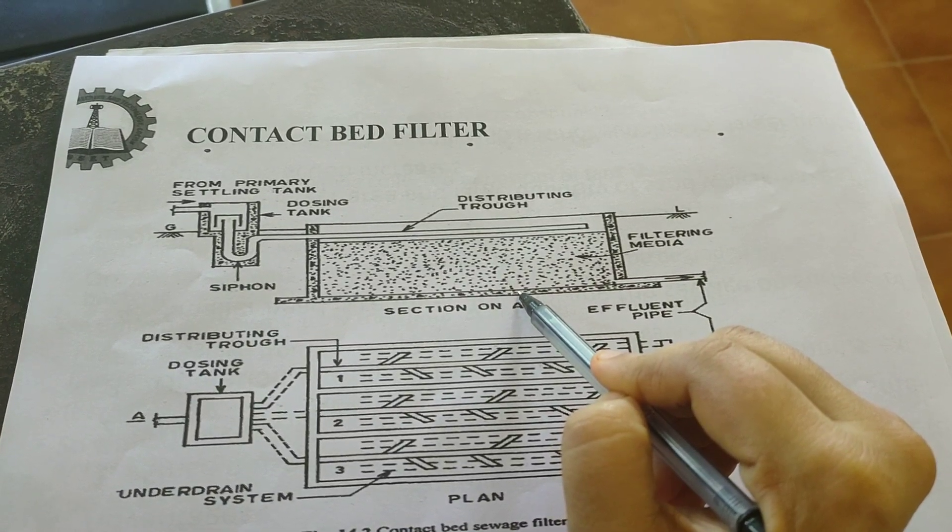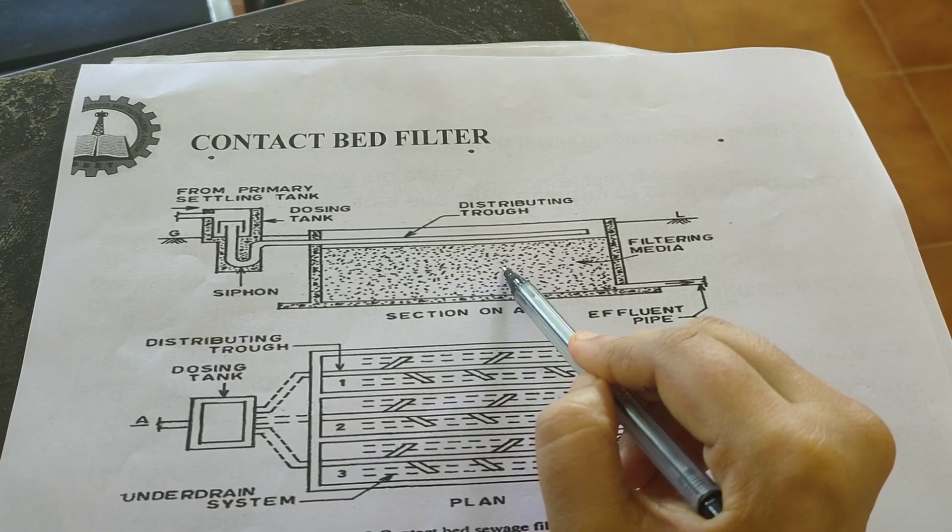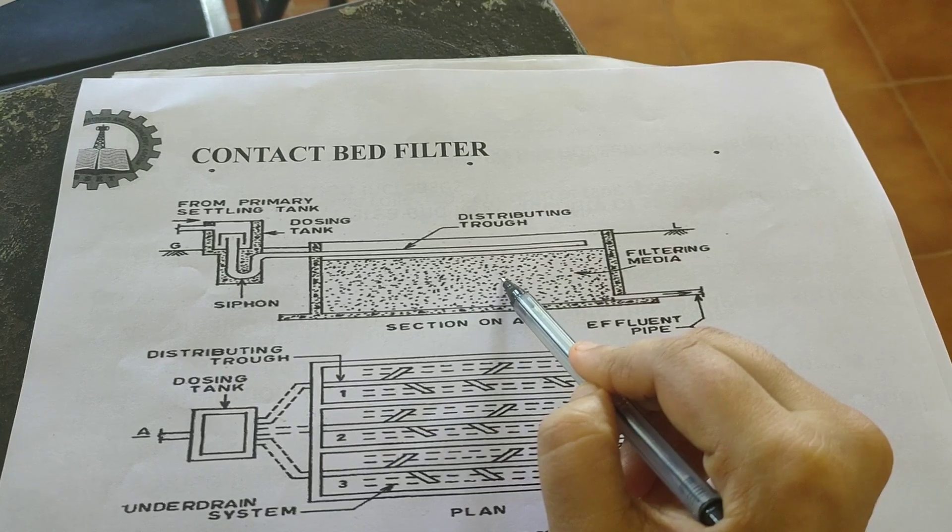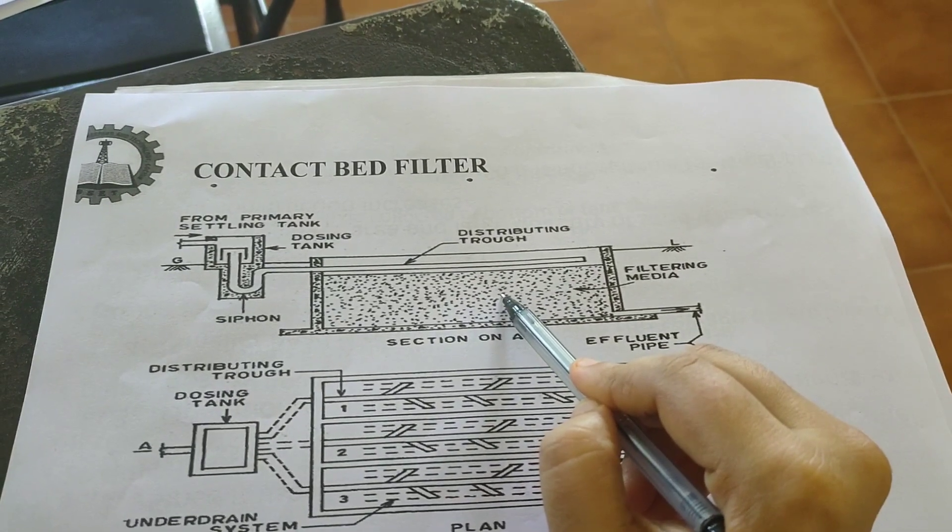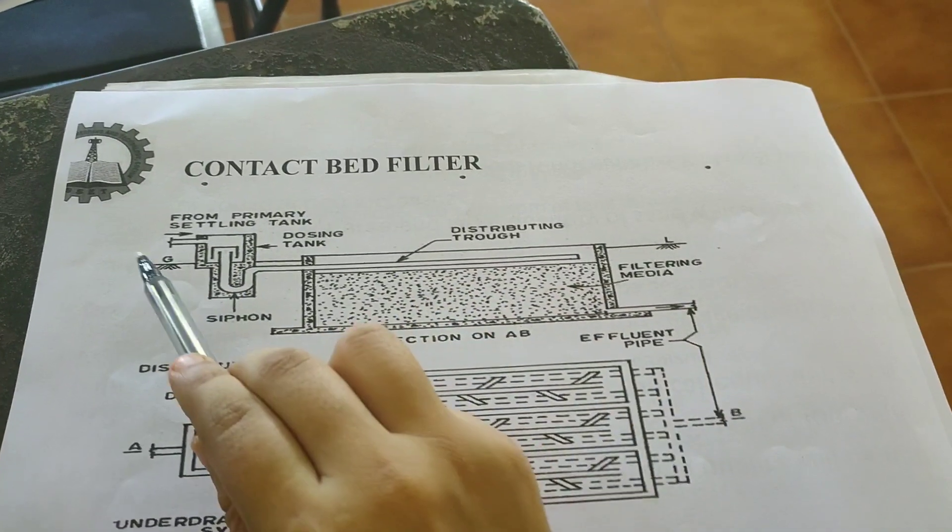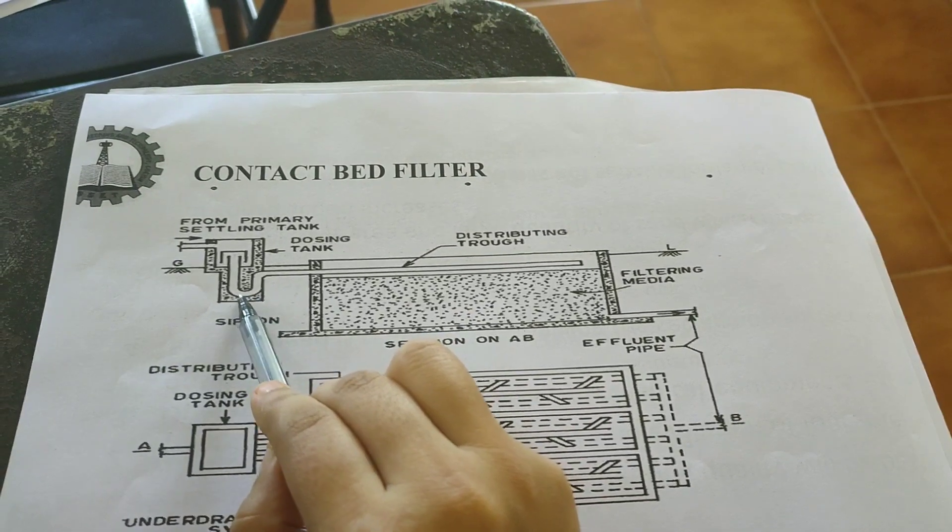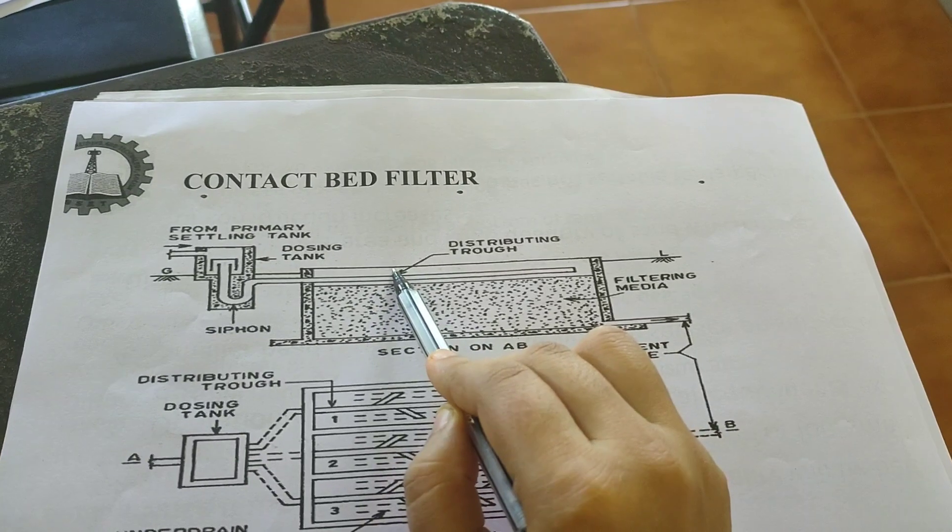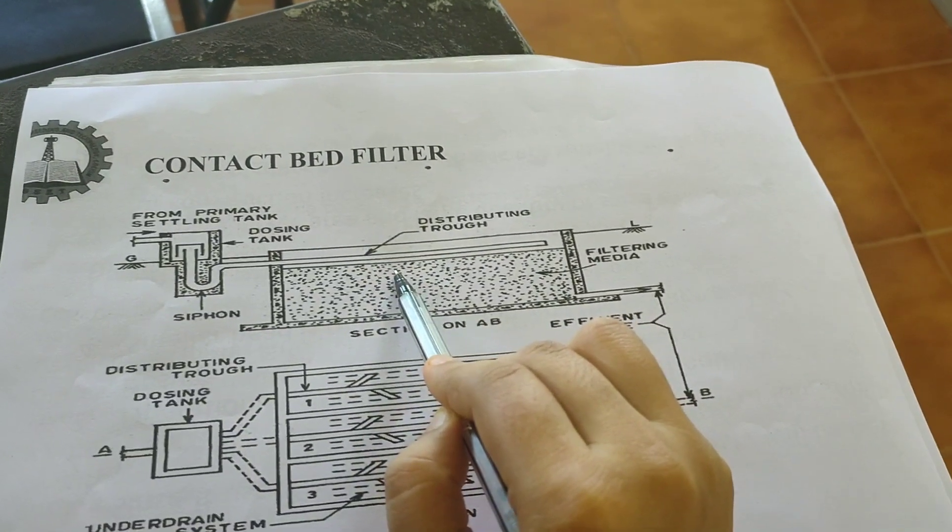This is also an example of an attached growth process. Here also, the sewage from the primary sedimentation tank will be sent to a dosing tank, then through a siphon the sewage or wastewater is sent to the bed filter.